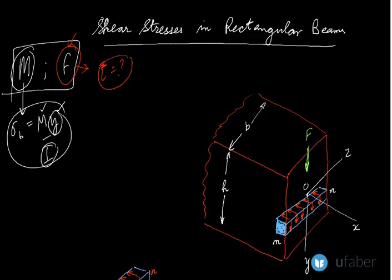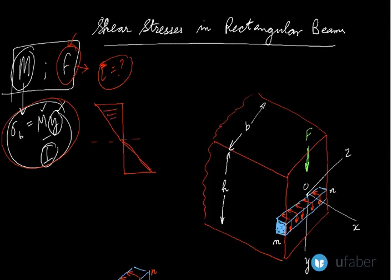As a recap, the bending stress varies across the cross-section such that its value at the neutral axis is zero. In the case of sagging, the topmost layer is under compression, giving a negative bending stress at the top.